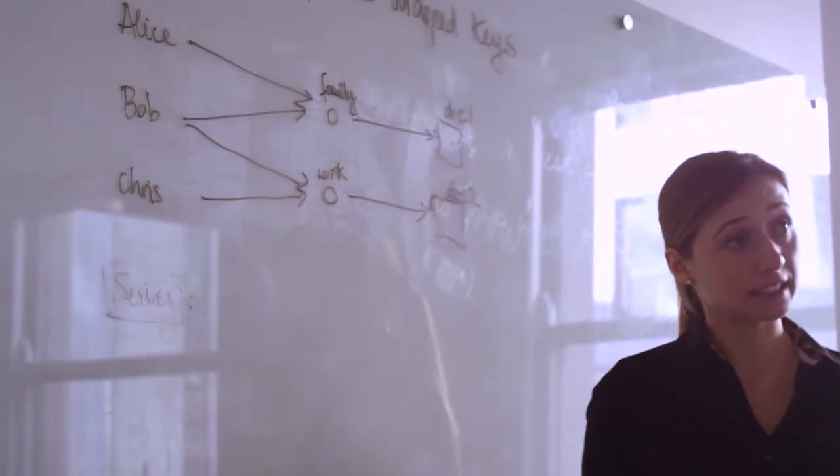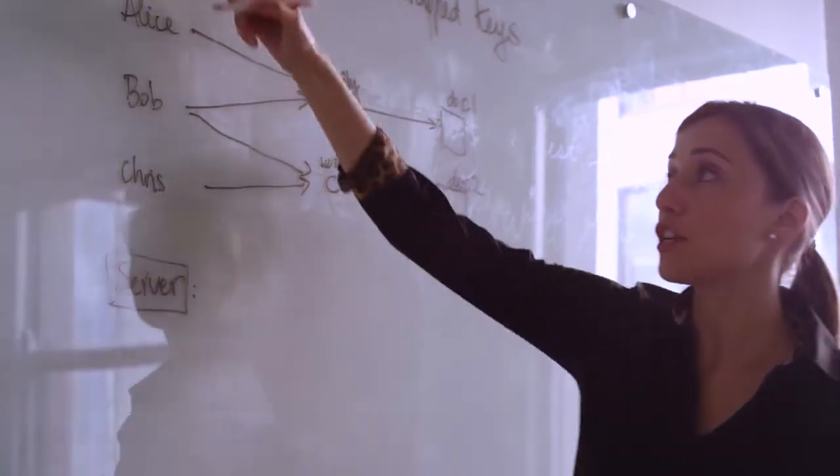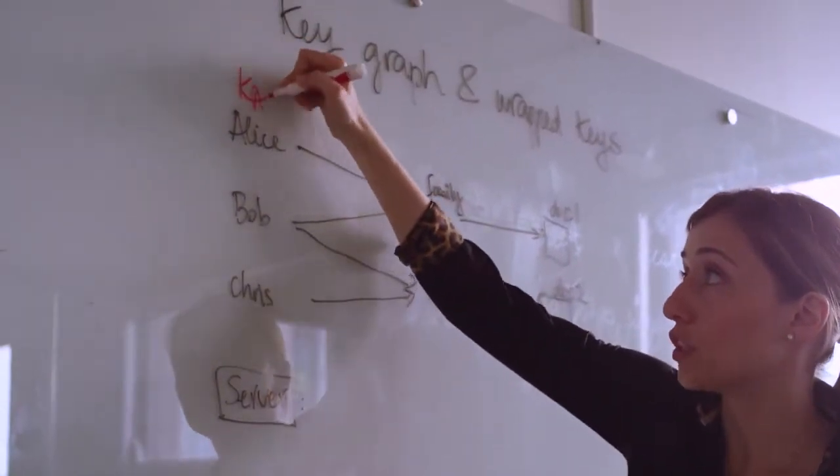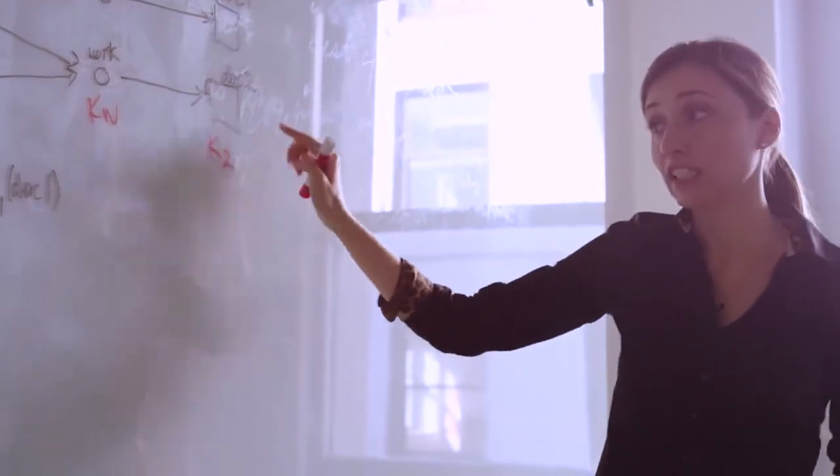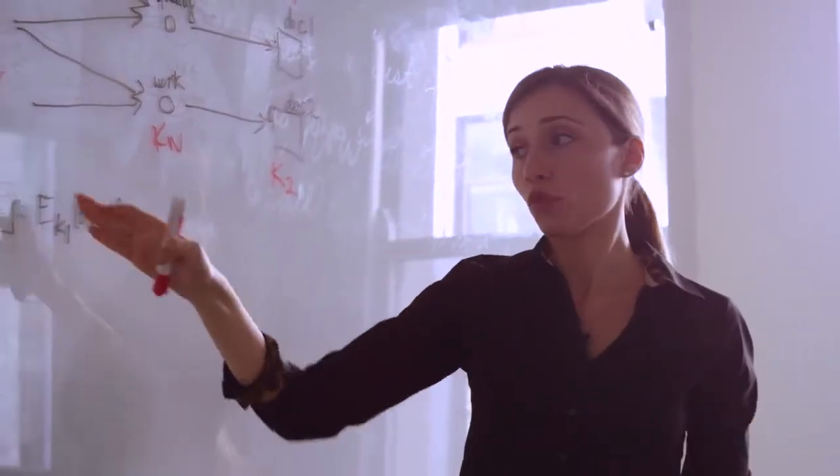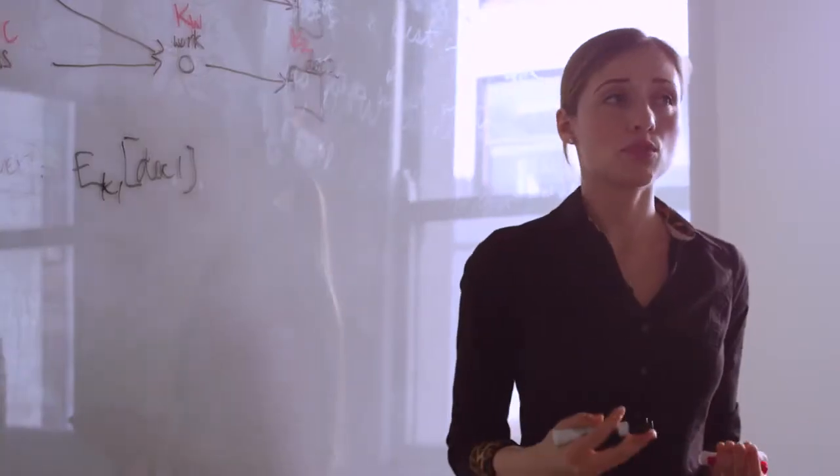The way Prevail enforces this access control is to use a graph of keys. First, every node has its own key. These documents are encrypted with the respective keys and stored encrypted at the server. For example, document 1 is encrypted with key 1. But the question is, where is key 1?